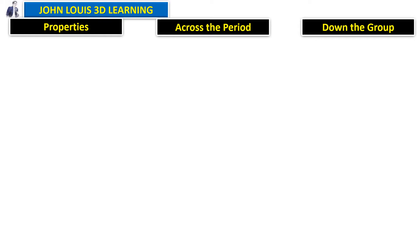So remember: the first column is properties, the second column is what happens to that property across the period, and the third column is what happens to that particular property down the group.